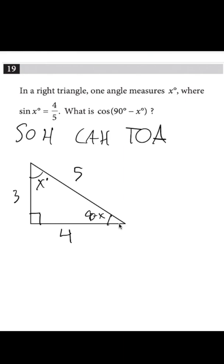What is necessary is if we take the cosine of 90 minus x, which is going to be this angle, it's going to be the adjacent, which is this one, over the hypotenuse, which is going to be the exact same thing as 4-5ths.